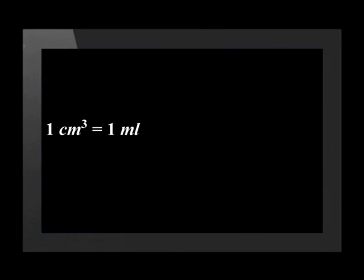It is not necessary that you learn these formulae, but you do need to know how to use them. We may be asked to give an answer in litres instead of cubic metres. To do this, we will need to do a conversion calculation. One cubic centimetre is equivalent to one millilitre. One cubic metre is equivalent to one thousand litres.